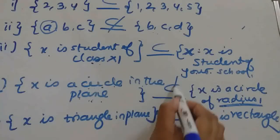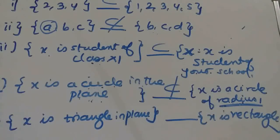Next example: X is triangle in plane, X is rectangle in plane. So this is also not a subset.